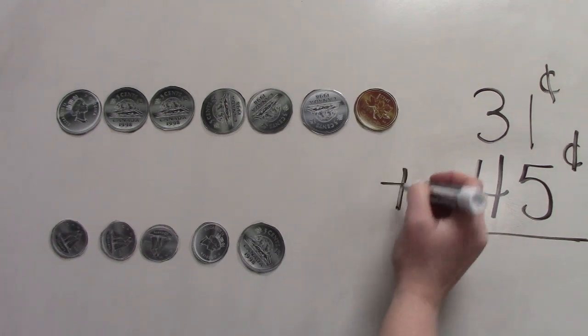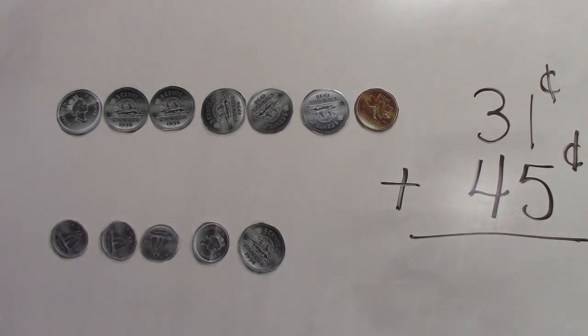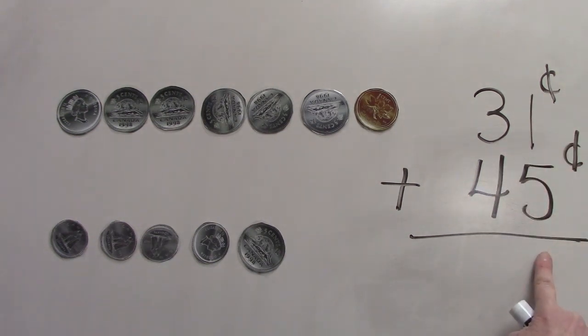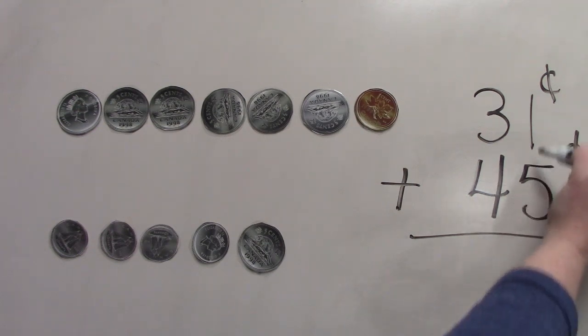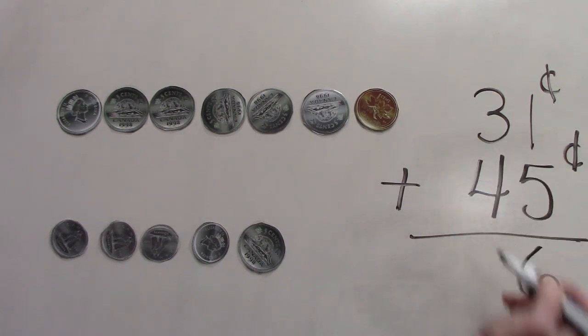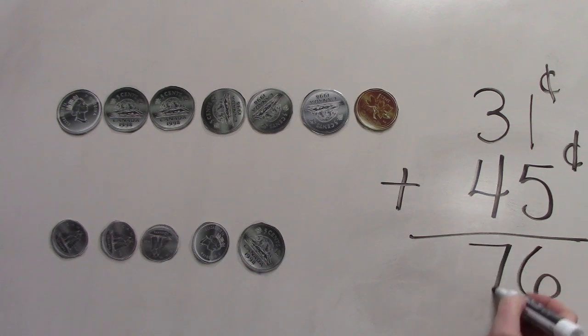We're going to add these two numbers together. The first thing that we're going to do is we're going to add the two numbers in our ones place. Whenever we add, we only add the numbers that are right above and underneath one another. One plus five is six. Three plus four is seven. 31 plus 45 is 76.